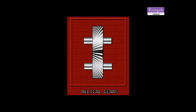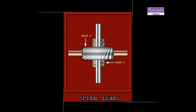The crossed helical gear or spiral gear. For connecting non-parallel shafts, the spiral gears may be used. The gears may be of same or opposite hand as shown in the figure.